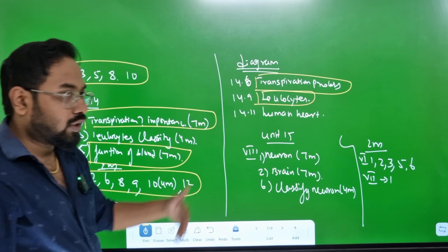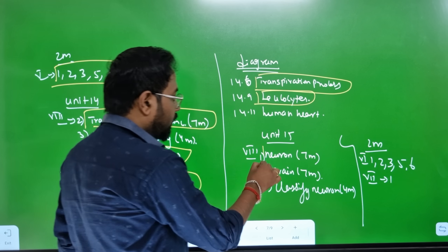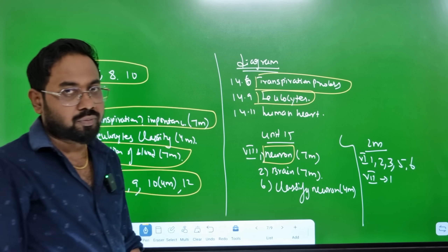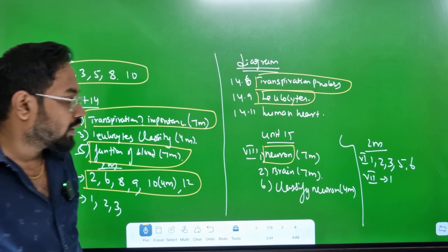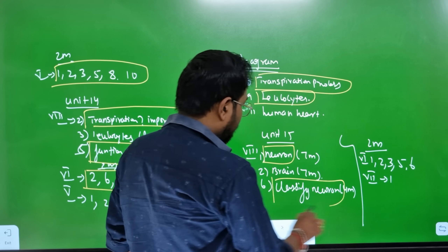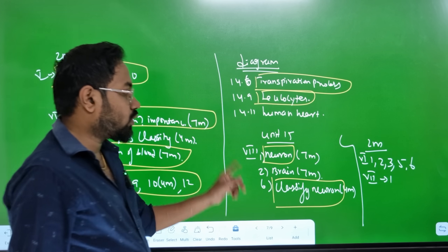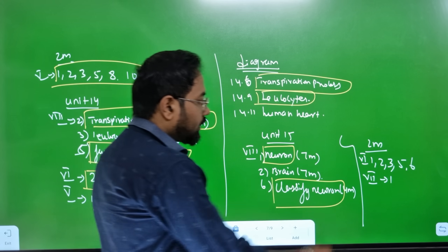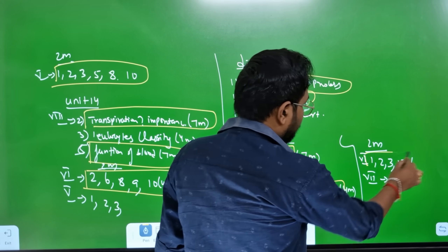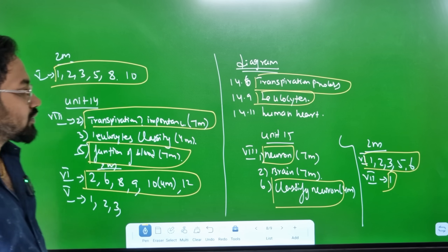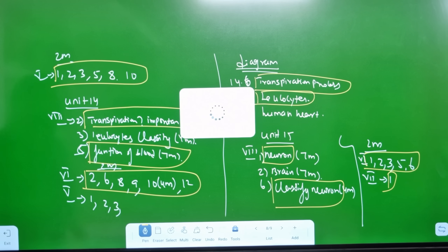Roman number 8 is neuron - 7 marks. Diagram - Brain. You can see it. Classified neuron is 4 marks. So this is 6 questions. Roman number 8, 2 marks. This is confirmed. Stimuli. So this is the answer. Unit 16.